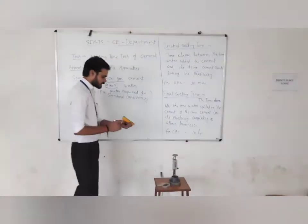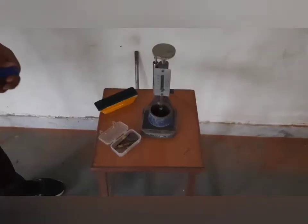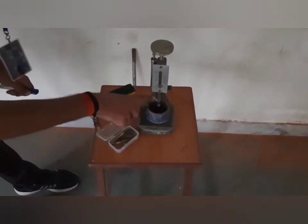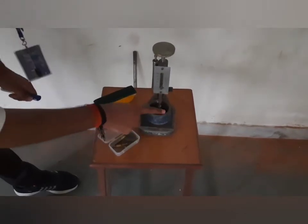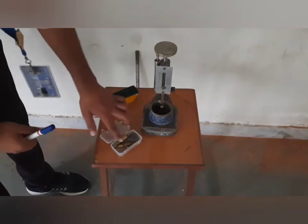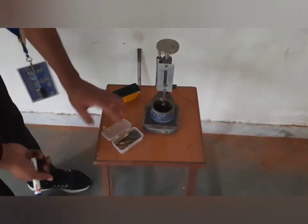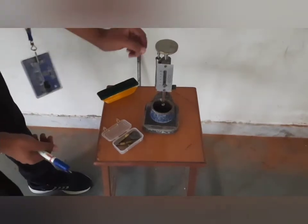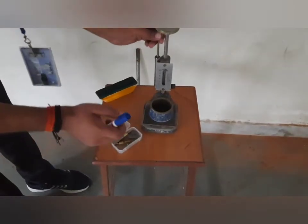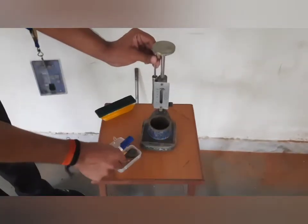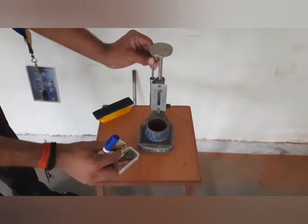Now, we will calculate setting time. We will fill the sample in this mold. We will fill it to the top and clean the top. Then, we will use the needle. If we calculate consistency, we use that needle. For setting time, we will use the 1 mm square cross-section needles.